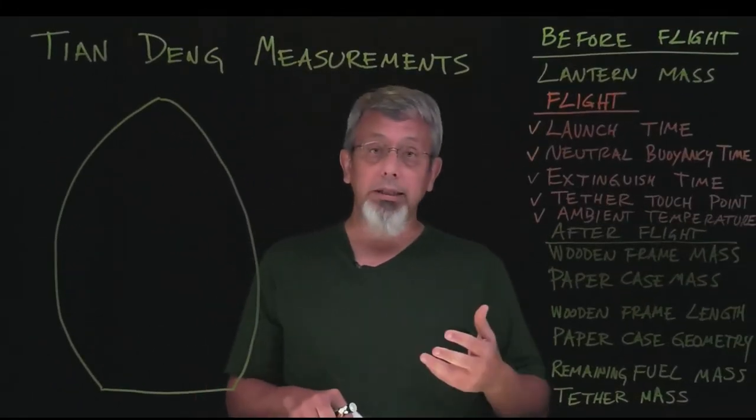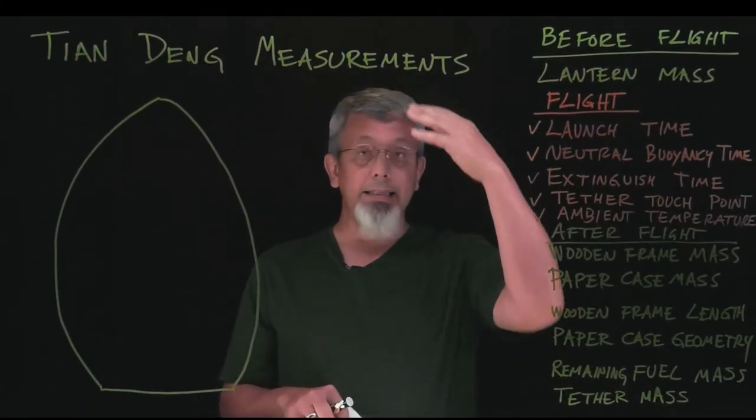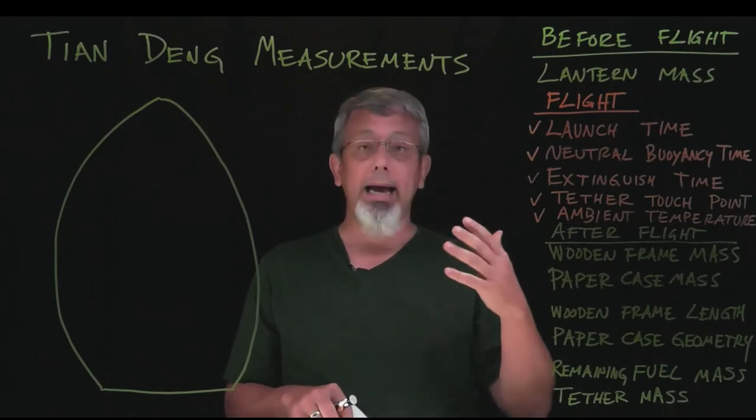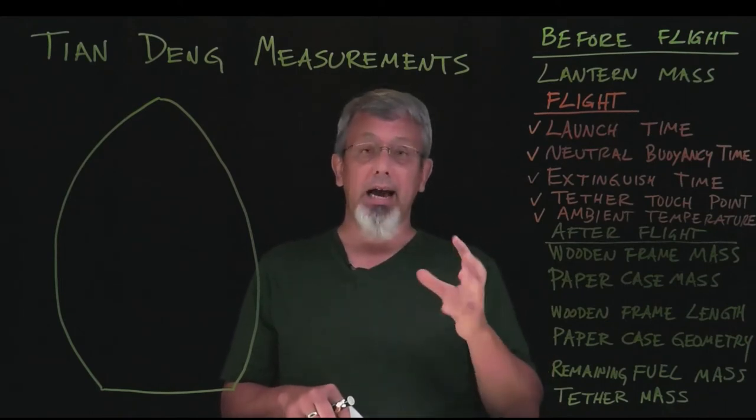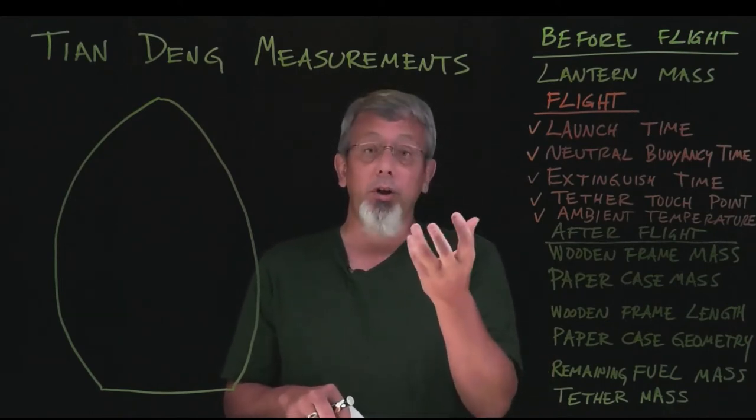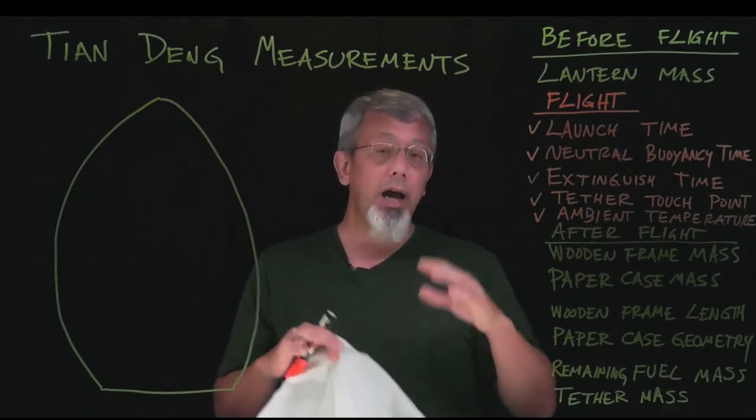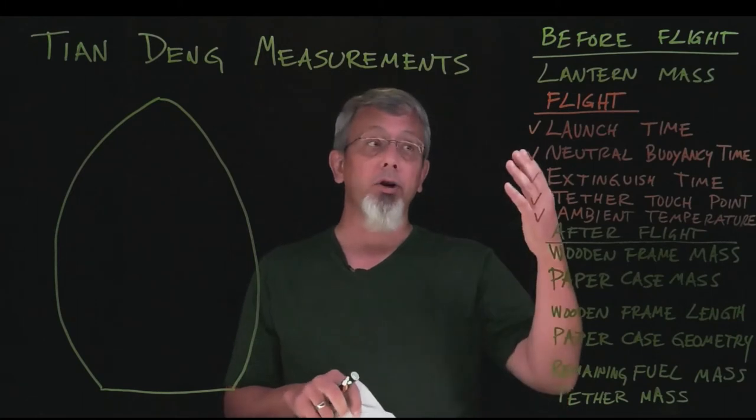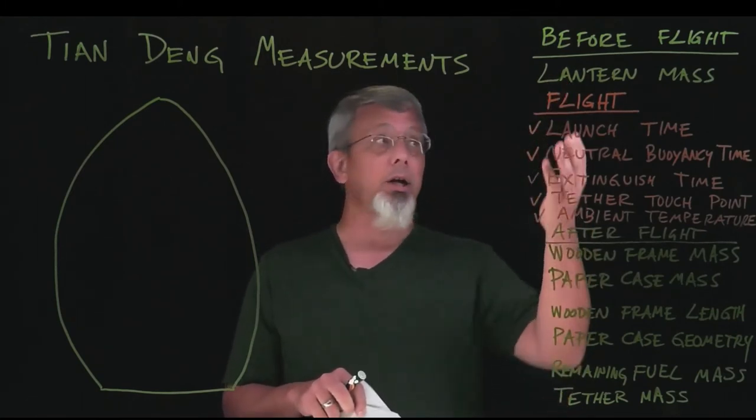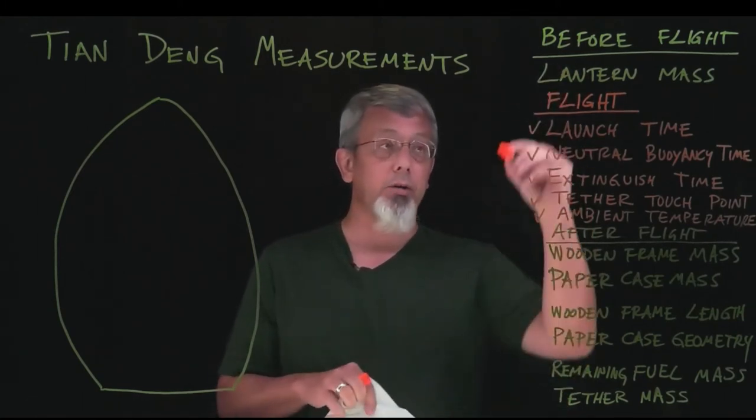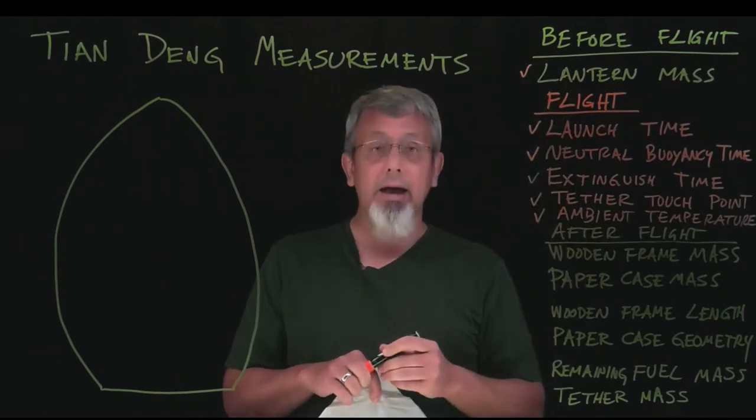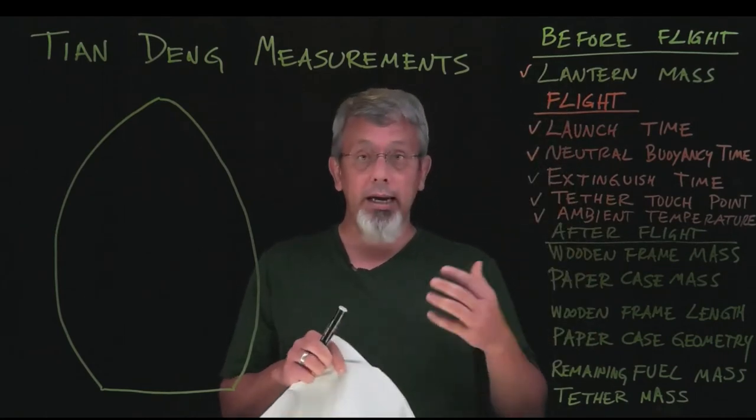Now, part of the process for launching the lantern, when you bring it back down, you're going to cut out the fuel cell, and you're going to have a burnt fuel cell, hopefully that you've stored in a jar or something like that to bring home for measurements. So now we're assuming at the point you've flown the lantern, you've gathered the flight information, you've gathered the pre-flight information, and now we're going to gather some additional information so that we can analyze the lantern.